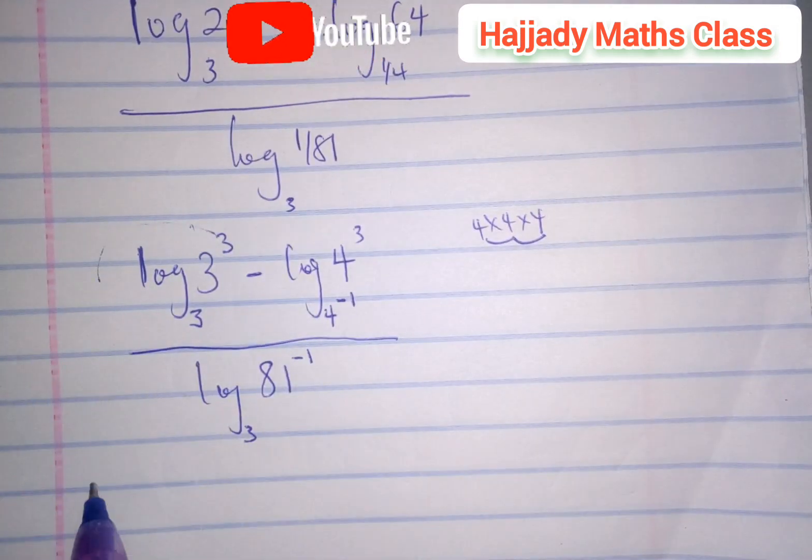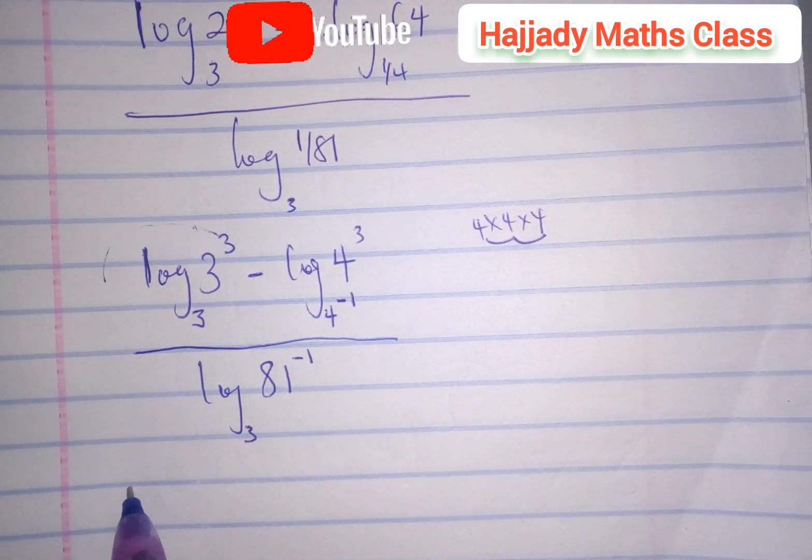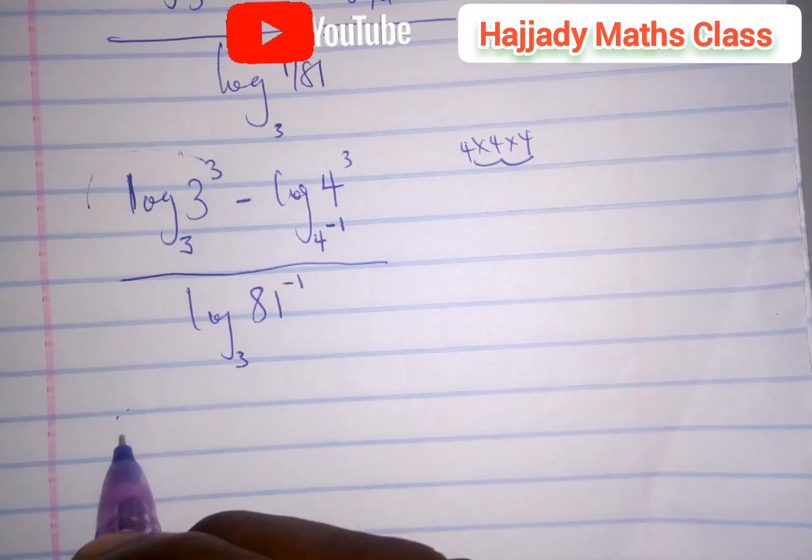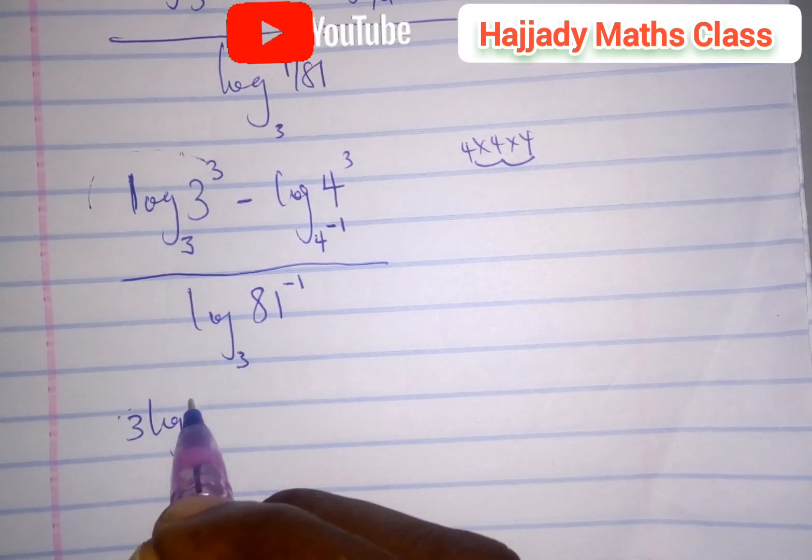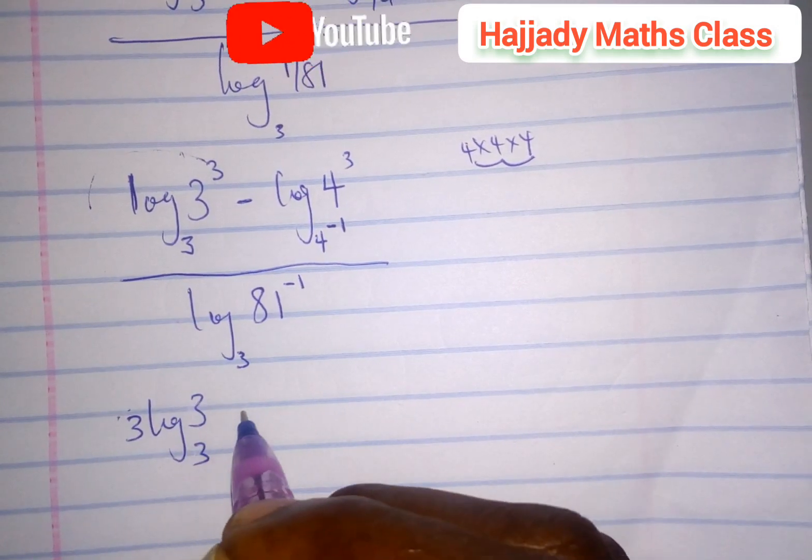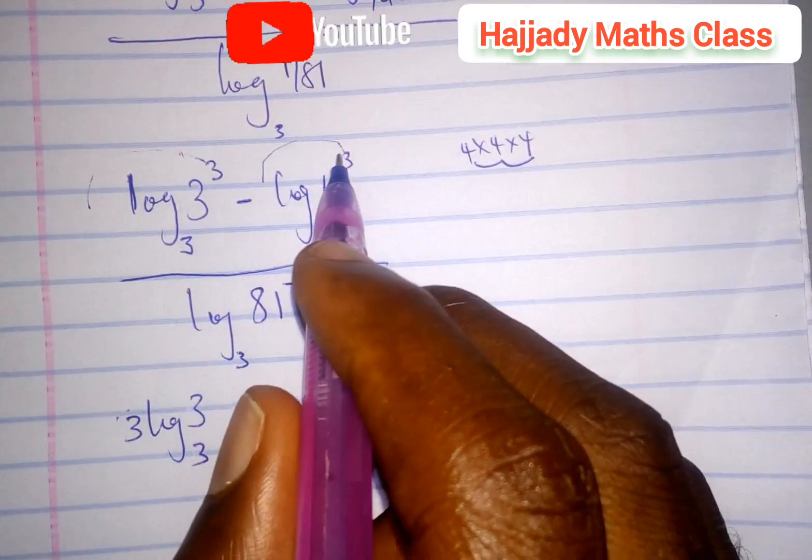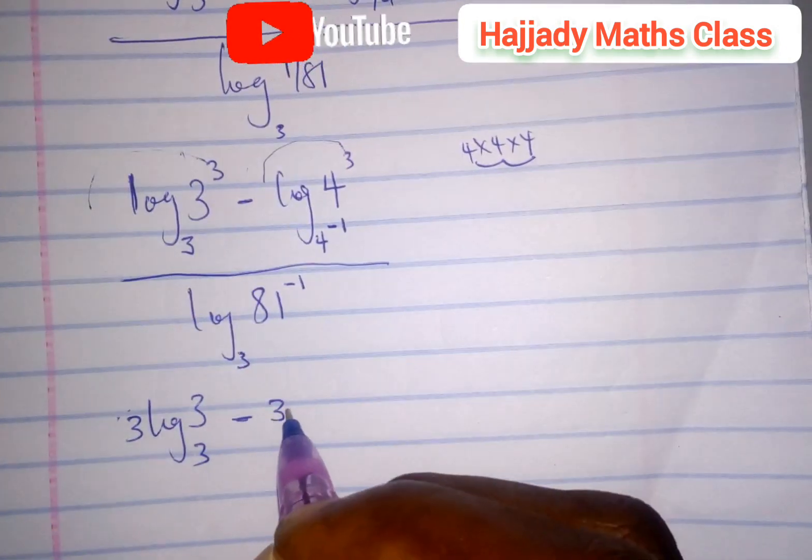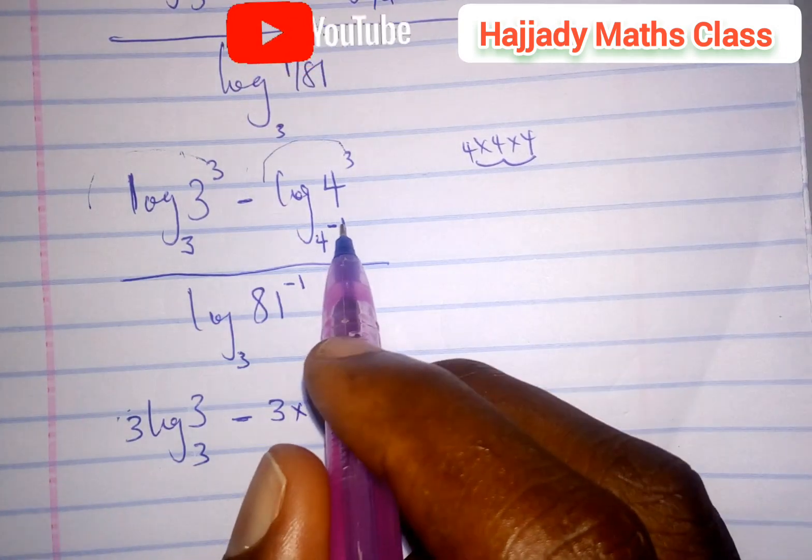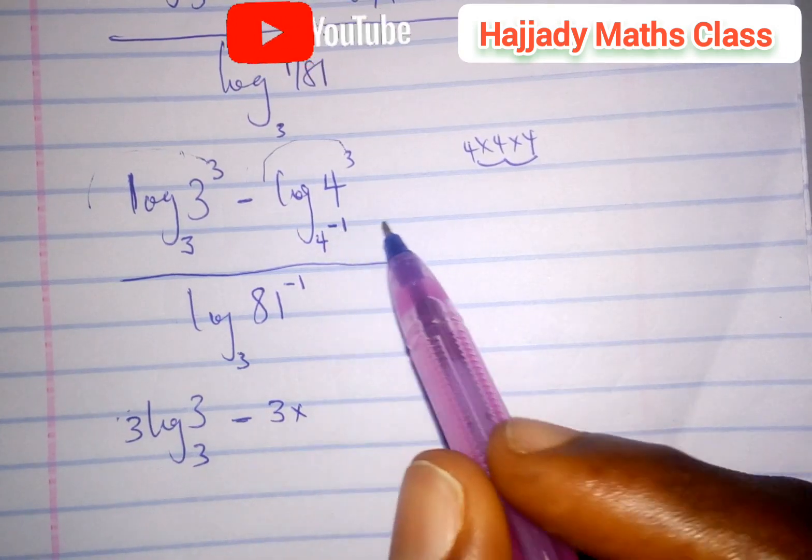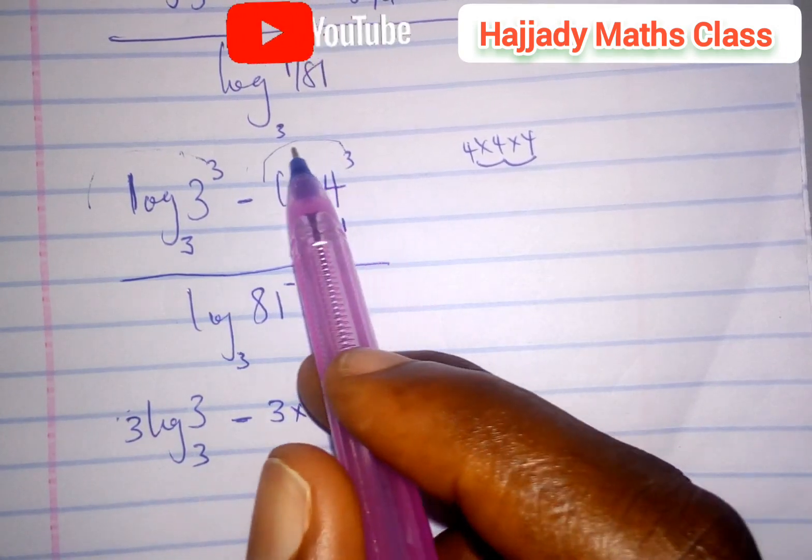This translates into 3 log 3 base 3, minus the 3 can easily come to the back, which is 3 times. Don't forget from the rule of logarithms in our previous videos: if this is coming to the back, it's going to be in the reciprocal form, that will be 1 over minus 1.